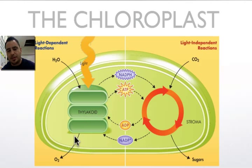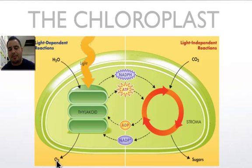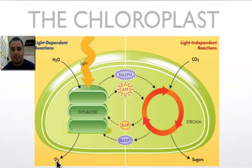As a result of splitting water, we get oxygen — which is essentially a byproduct, but one that helps us breathe and survive, and is also used to break down glucose later on. Don't forget, plants also need oxygen so they can break down glucose through cellular respiration.